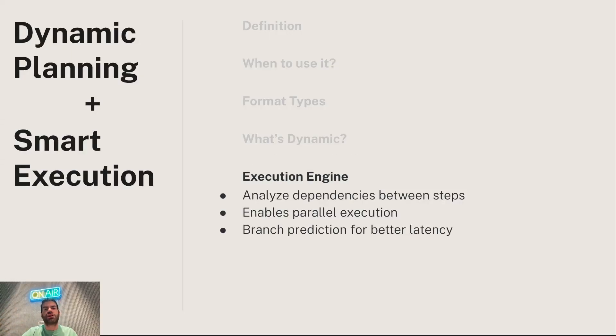And when we talk about efficiency, we want to put smart execution into that. Essentially, every planner needs an execution engine, because an execution engine can analyze dependencies between steps, which enables parallel execution, and can also have some sort of a trade-off between speed and cost. For instance, you can use branch prediction for faster systems.